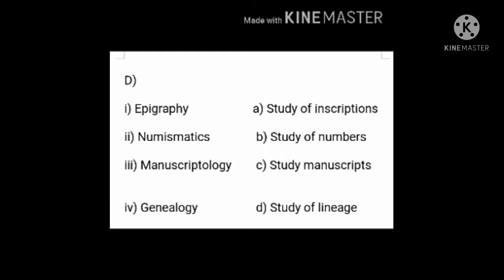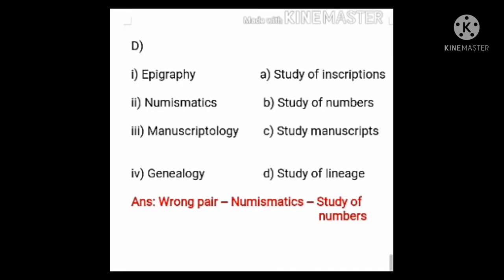Now let's read the last identify. The pairs are: Epigraphy — study of inscriptions; Numismatics — study of numbers; Manuscriptology — study of manuscripts; and Genealogy — study of lineage. Among these, the wrong pair is the second one: Numismatics is given as study of numbers, but it is actually the study of coins. Numismatics means study of coins, not study of numbers. So write down the wrong pair: Numismatics — study of numbers.